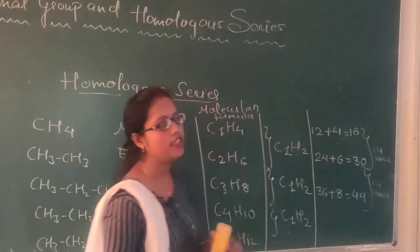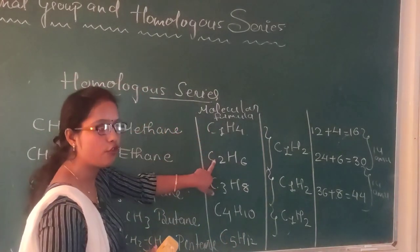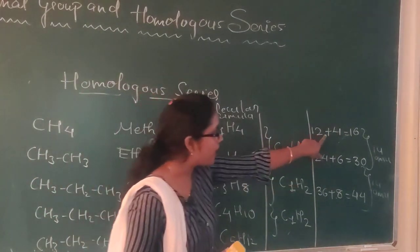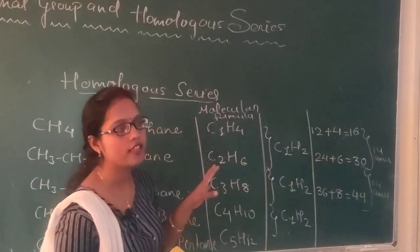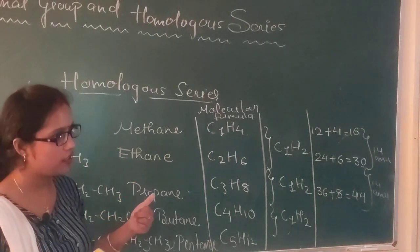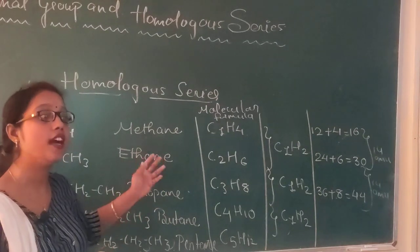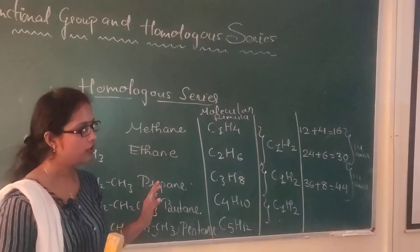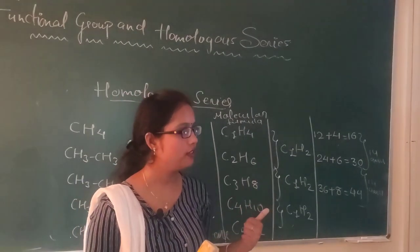So homologous series is a series jisme 2 compounds ke beech mein element ka difference CH2 hota hai aur mass ka difference 14 AMU hota hai. Agar aapko aisi kisi series mein dikh raha hai, toh aap bol sakte hain ki it is a homologous series. Aur yeh jo compounds hote hain unko bolte hain ki they are homologues of each other. So is it clear to you? Now we will start with some questions.